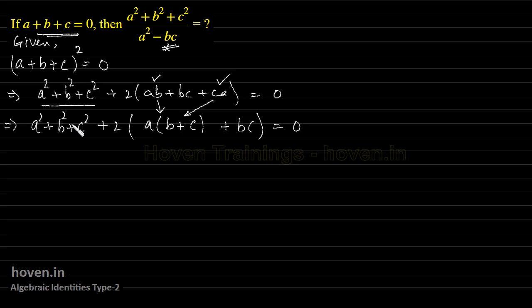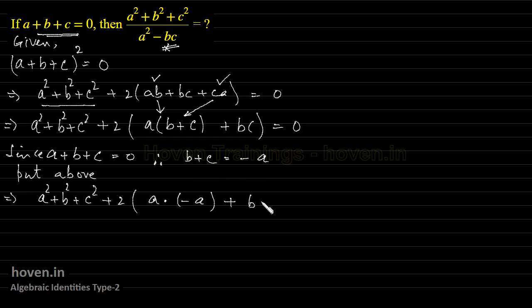Now let us go back and look at this. We know that a plus b plus c equal to 0. Since a plus b plus c is equal to 0, therefore, b plus c will be equal to minus a. So put this above, which implies a square plus b square plus c square plus 2 into a multiplied by b plus c is equal to 0. So this b plus c has come here.